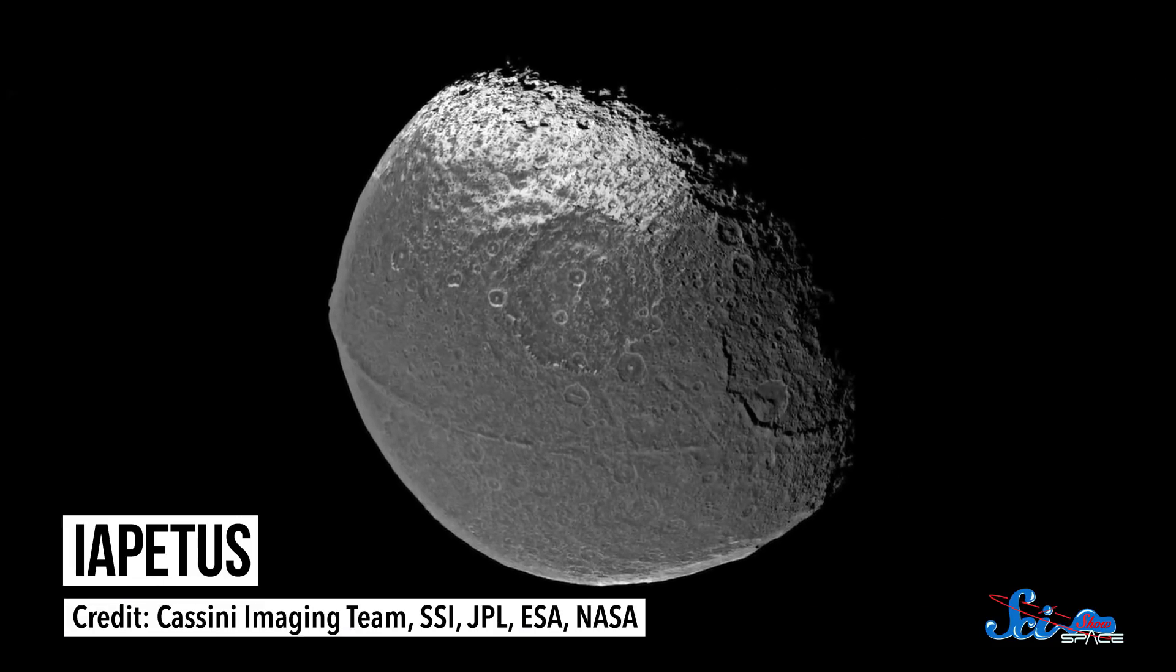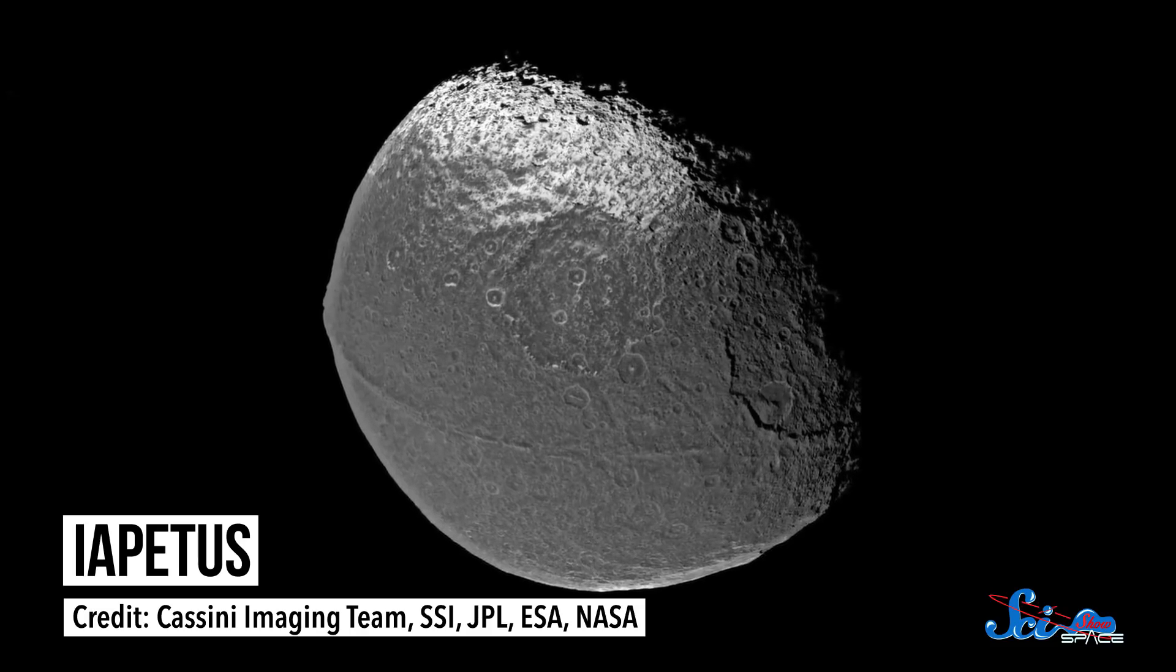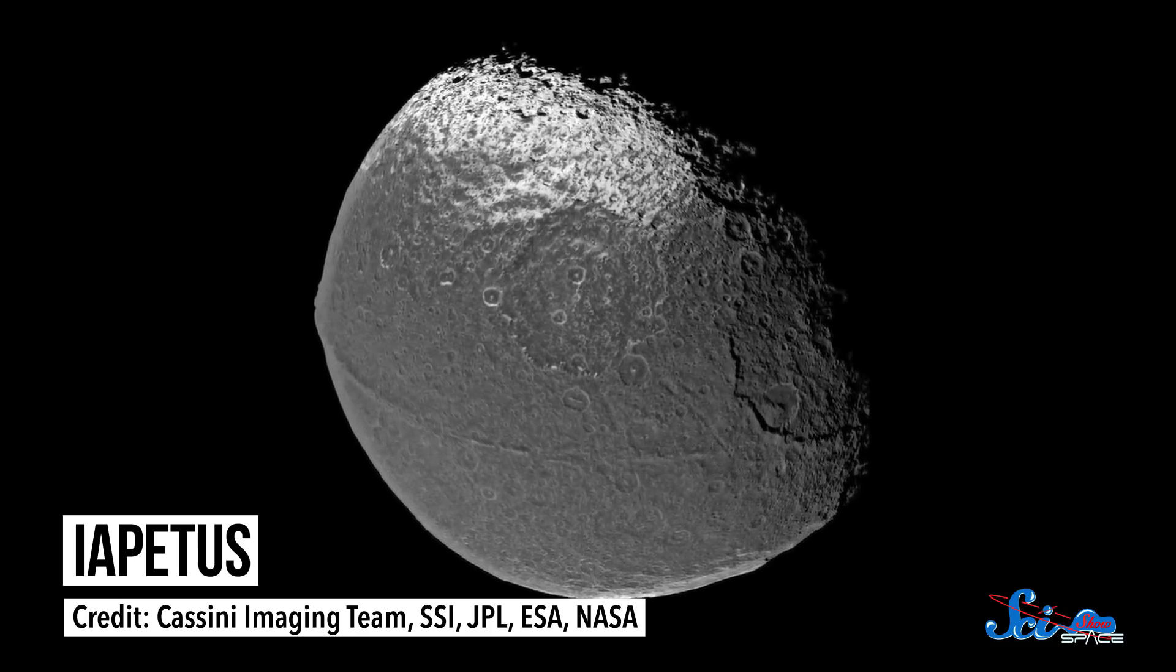And more direct collision angles made an equatorial ridge, like on Pan and Atlas. These models also apply to at least one of Saturn's larger, more distant moons too, Iapetus, which also has an equatorial ridge.